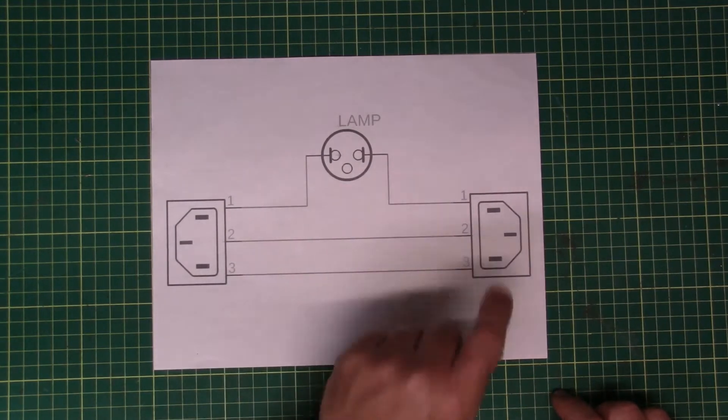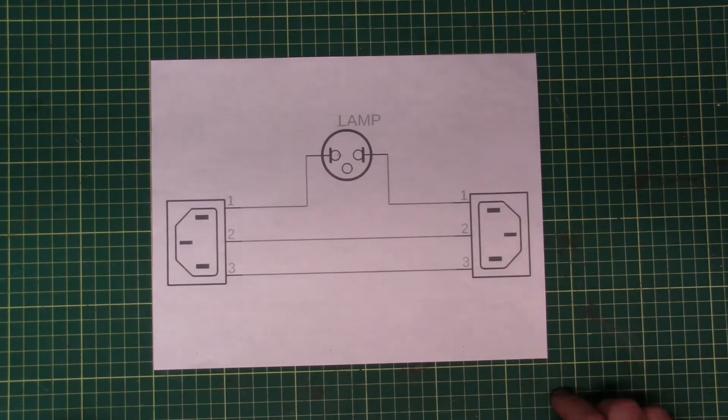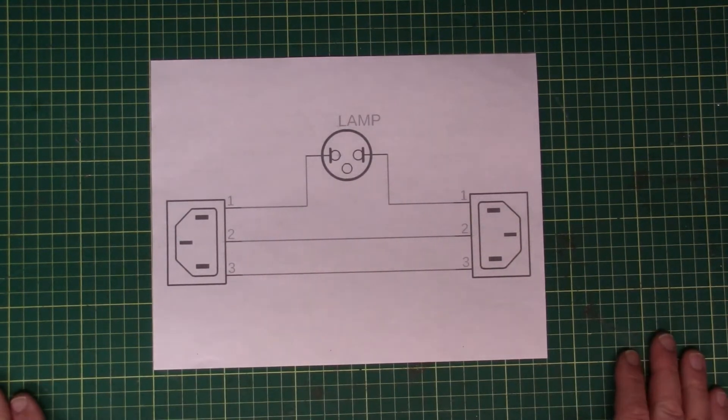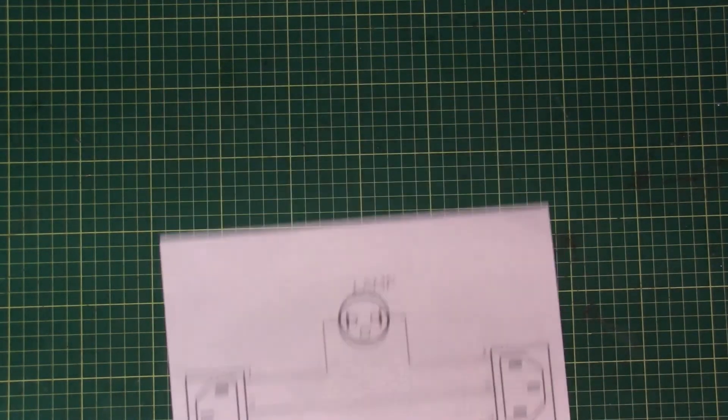A plug, a single lamp, and another plug. Now this can be broken down into an equivalent electrical circuit which looks like this.